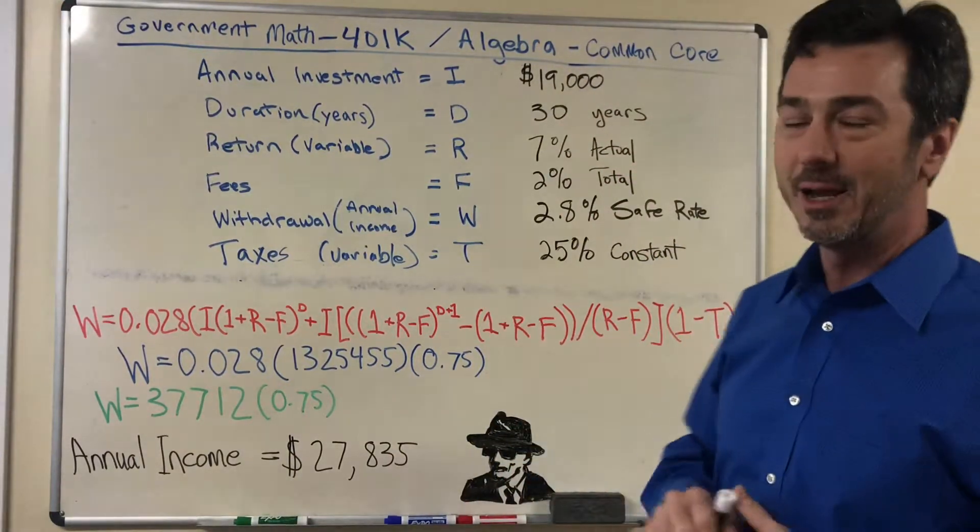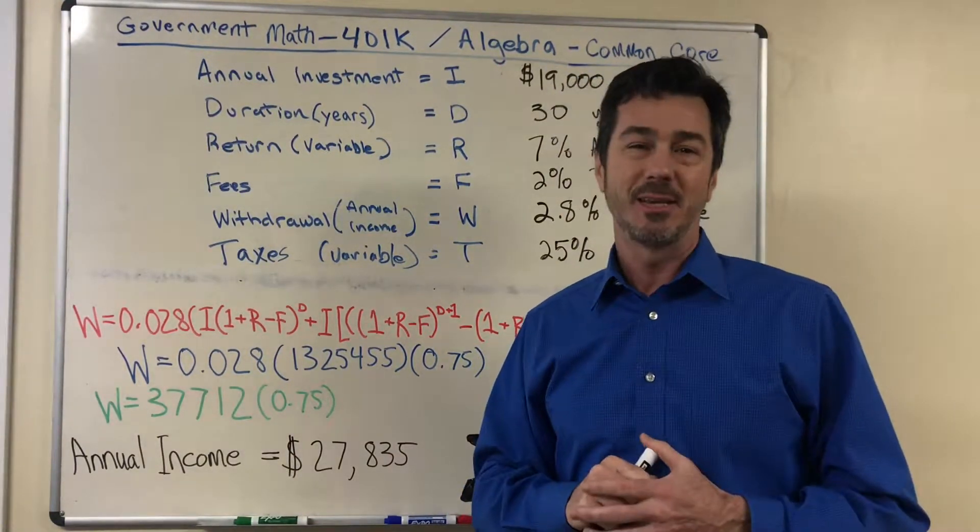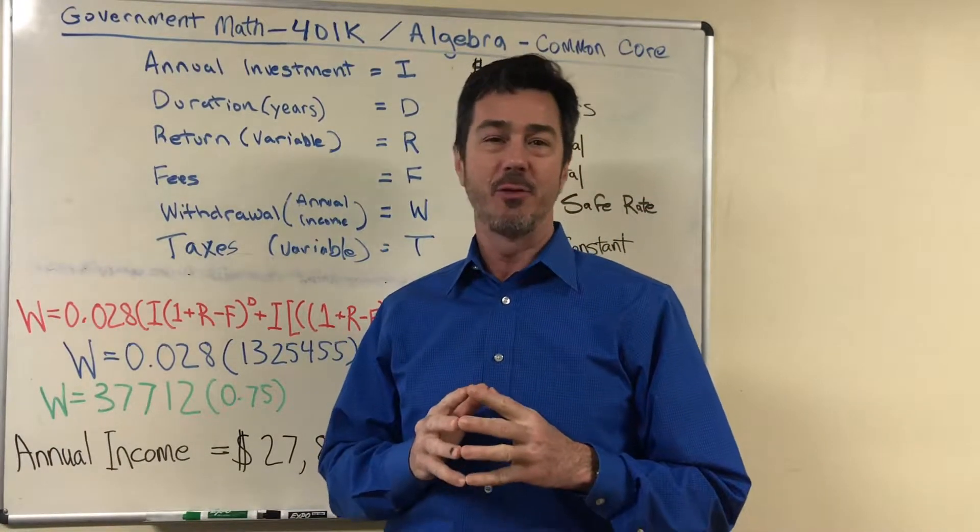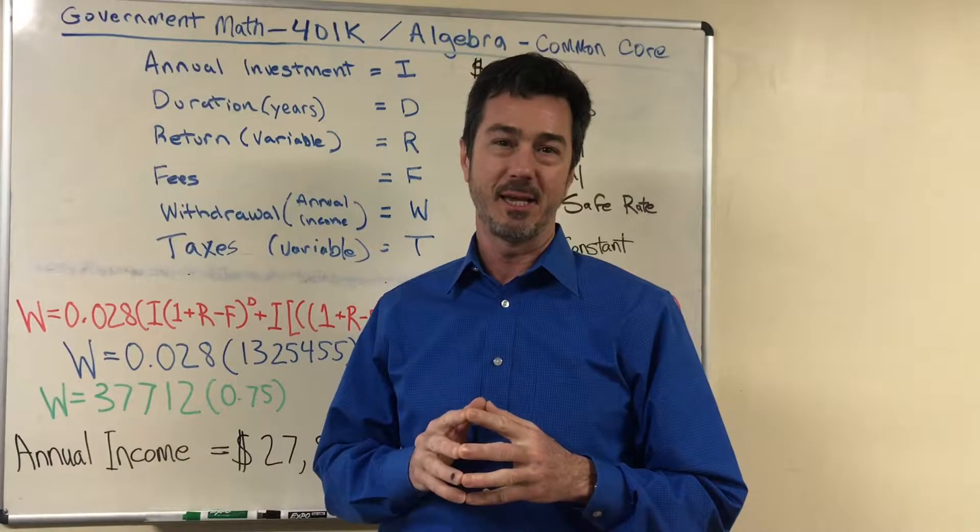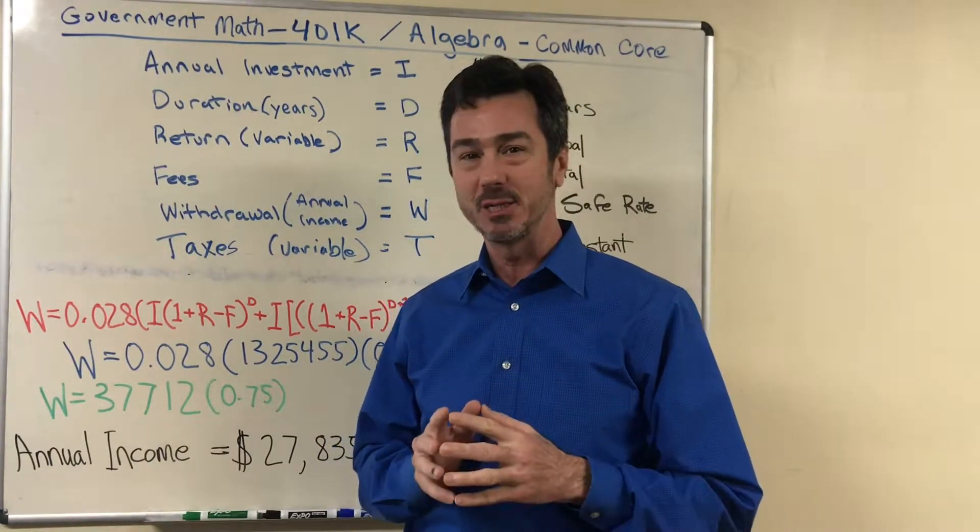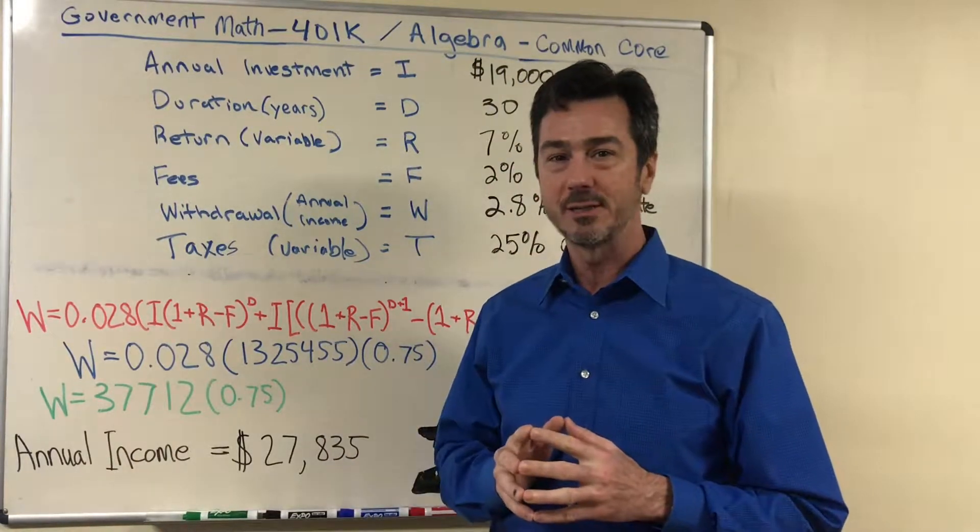So this is the formula and I'm going to let Ethan explain it to you. Ethan made a 36 on the math portion of his ACT. So he's a little better in math than I am and I'm going to let him explain how this formula actually works out.